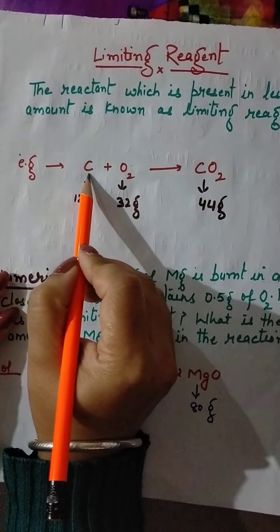So the reactant which is present in the lesser amount is known as the limiting reagent. Now let's talk about numericals — what kind of numericals there are and how to solve them. Here we have said that you have burned carbon, so tell me: if carbon is 2 grams and oxygen is 32 grams, then which is the limiting reagent?